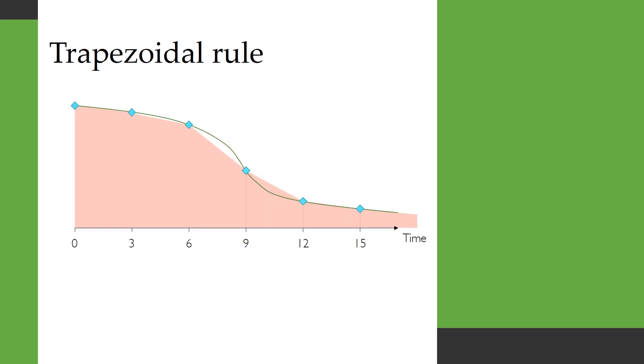So the trapezoidal rule does something like this which is where it connects by a straight line between these points and then calculates the area underneath that piecewise linear function and it's called the trapezoidal rule because each cycle we use the formula for the area of a trapezoid to calculate this.